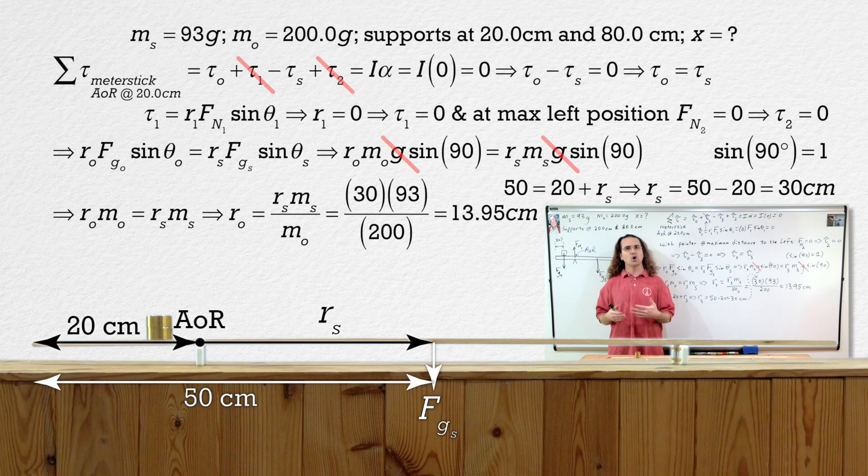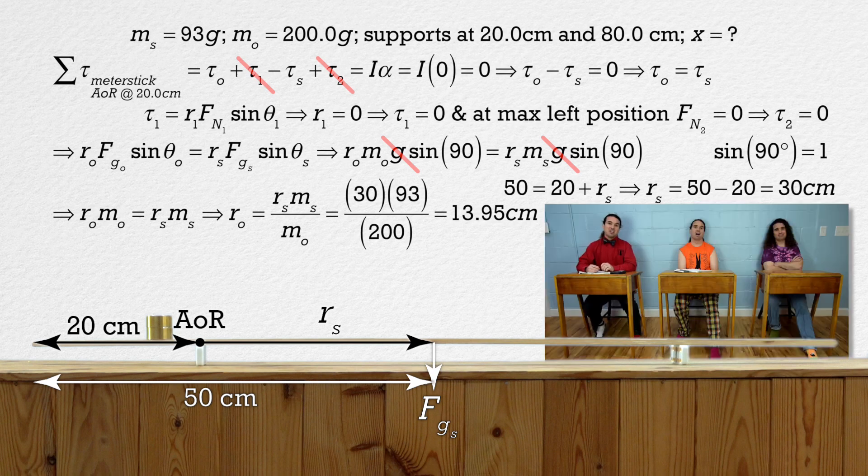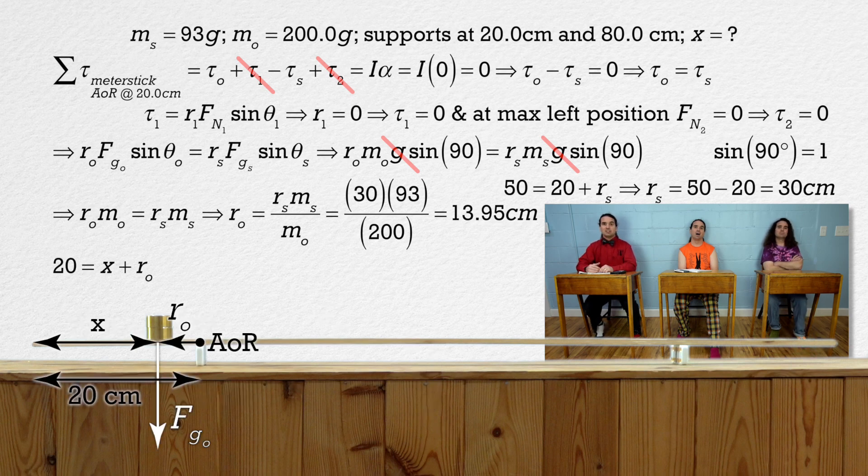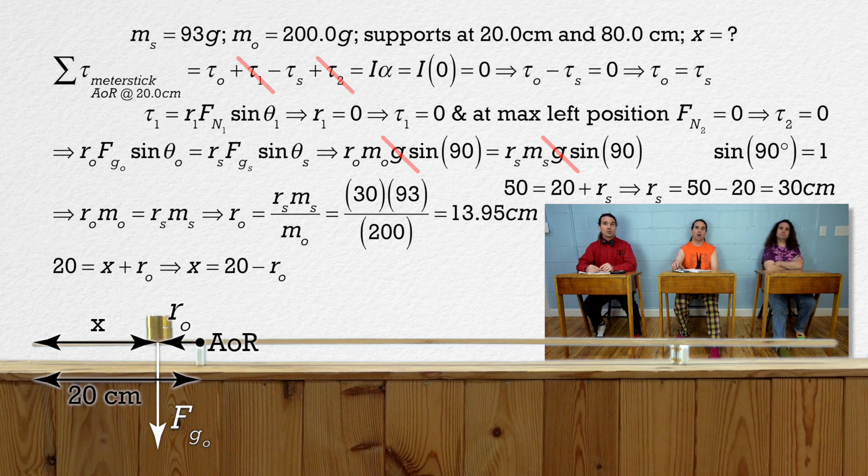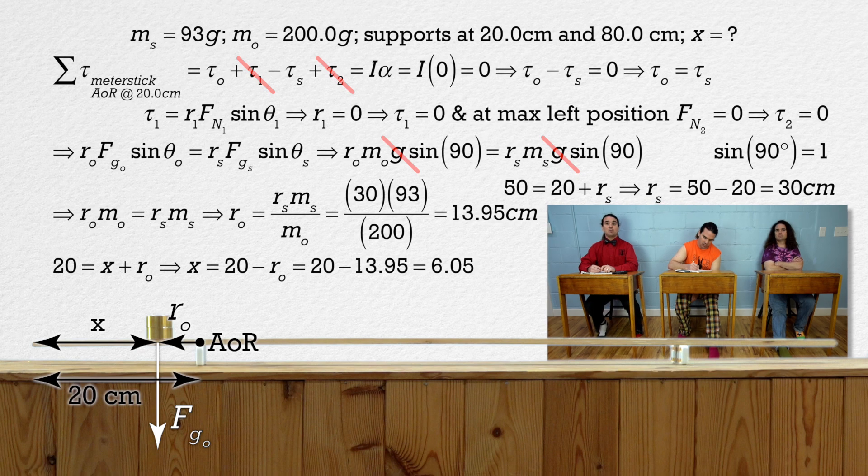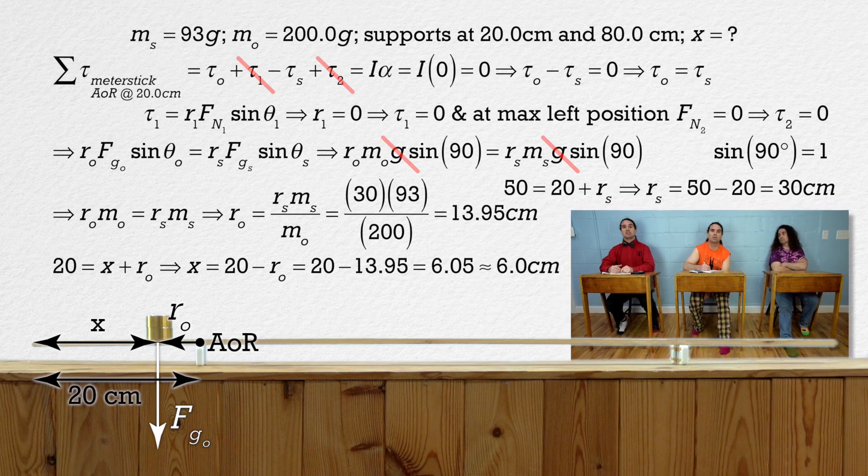But what is the answer to the question? What is the closest to the end of the meter stick the painter can go without the system becoming unbalanced? Alright, we solved for r for the object, not x. But 20 equals x plus r for the object, therefore x equals 20 minus r for the object or 20 minus 13.95 or 6.05.